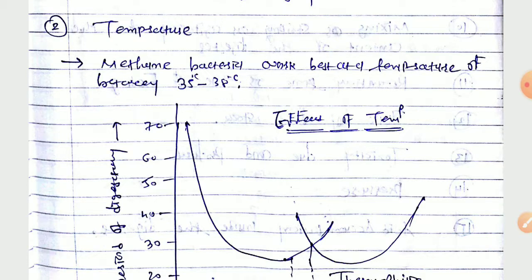The topics covered in this unit include: classification of biogas plants, comparison of biogas plants, biogas from plant waste for community plants, site selection, digester design considerations, design calculations, methods of maintaining and starting a biogas plant, utilization of biogas, and thermal gasification of biomass including pyrolysis.